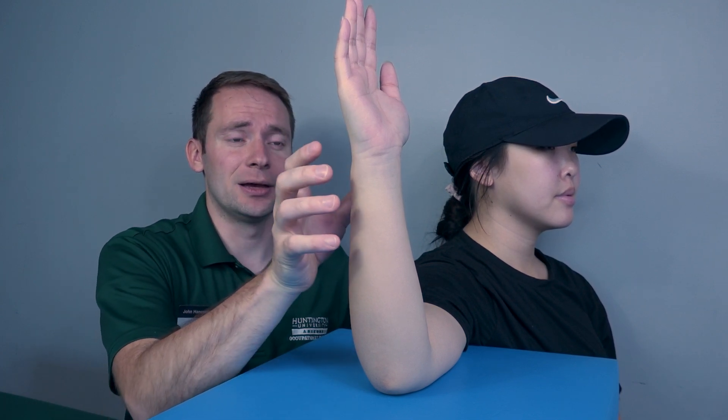Testing forearm pronation and supination in a gravity-limited position. Patient will be seated, arm at 90 degrees, elbow at 90 degrees, comfortably resting. First thing you will have your patient do is have their forearm supinated first. We are testing pronation, so while they're in supination, you will ask them to rotate their palm.